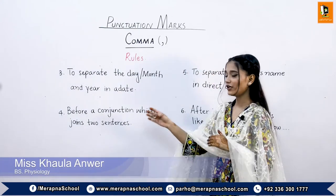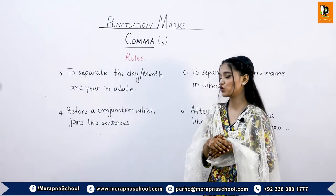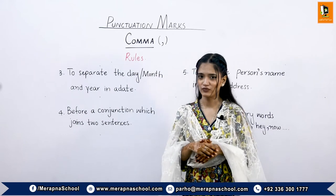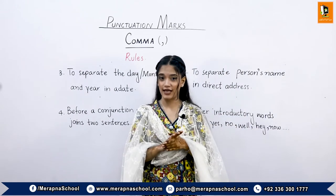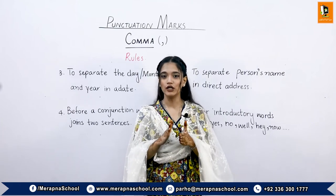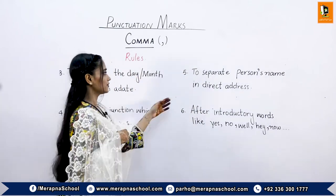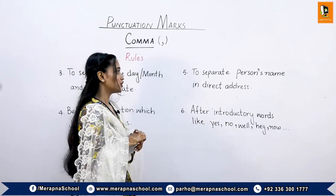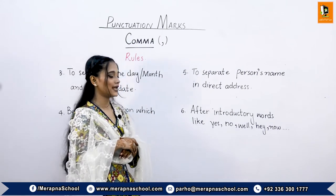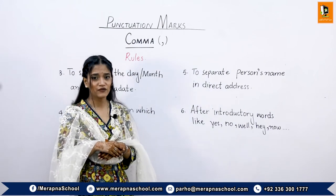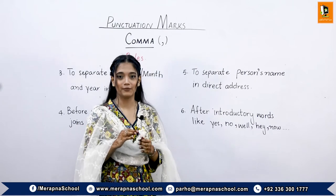The fourth rule is before a conjunction which joins two sentences. For example: 'Either you enjoy the rain, or you curse the rain.' The fifth rule is to separate a person's name in direct address. For example: 'Would you like to answer this question, Sara?'